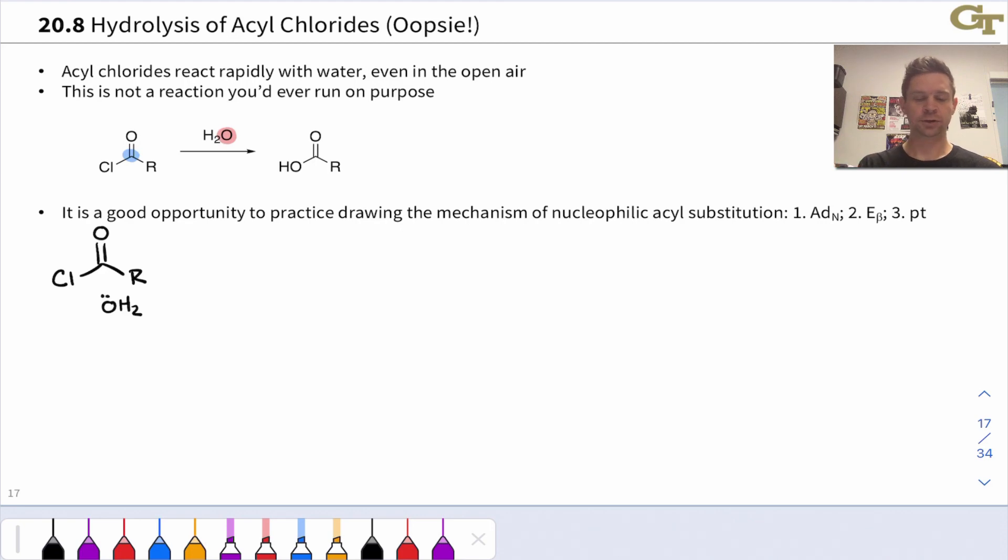The reaction converts an acyl chloride into a carboxylic acid and it's a nucleophilic acyl substitution with water as the nucleophile. Chloride is such an awesome leaving group that this can occur readily and the byproducts here are H3O+ and Cl-.